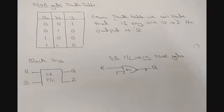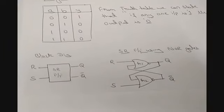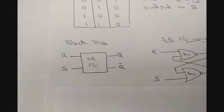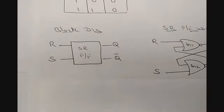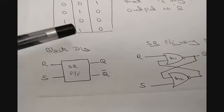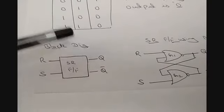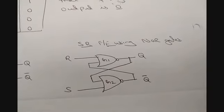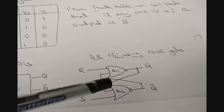This is the block diagram of the SR flip-flop — sometimes also known as RS flip-flop. It always has two outputs: Q and Q-bar, where Q is the output and Q-bar is the complement of Q. The structure uses two NOR gates G1 and G2, where R and S are the inputs, and the outputs are cross-coupled back as inputs to each other.